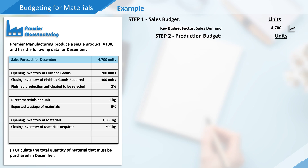The next step is to prepare the production budget — that is the number of finished goods we need to produce — and there are a couple of factors that will influence this figure, such as levels of opening and closing inventory and whether any of the finished goods will fail quality control and be rejected. We're told that opening inventory of finished goods for the period is 200 units. These goods have already been produced and can be used to meet the demand, so we can deduct these from our starting sales figure of 4,700 units.